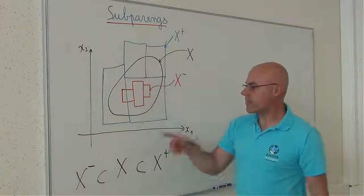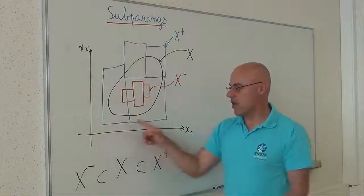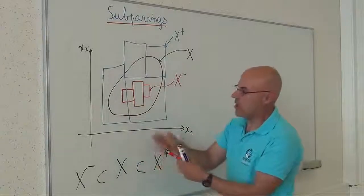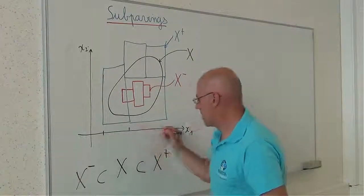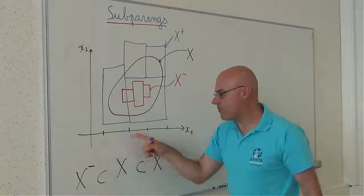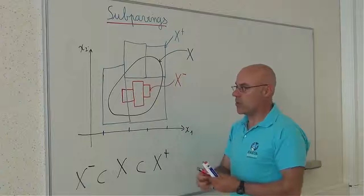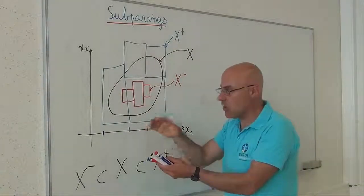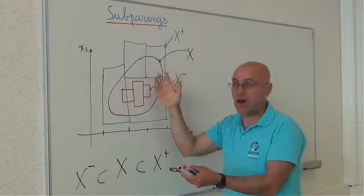Note that the bounds of the components of each box, represented here for the blue for instance, are floating-point numbers. So subpavings can be seen as a machine approximation of subsets of R^n.